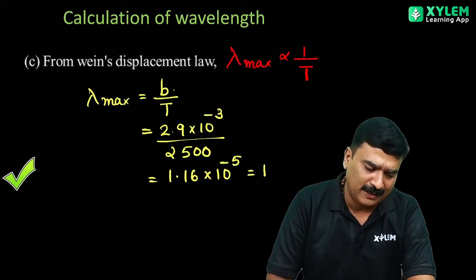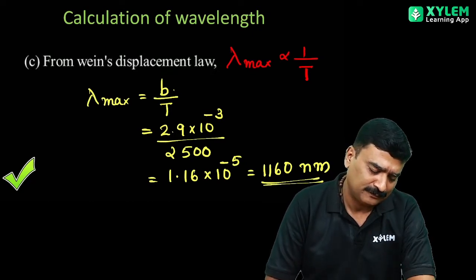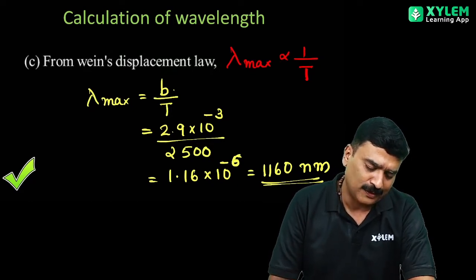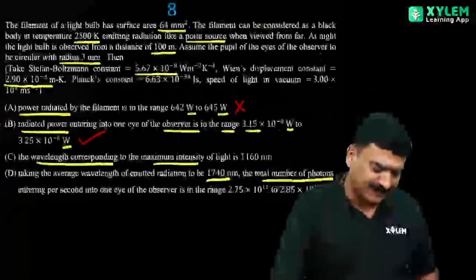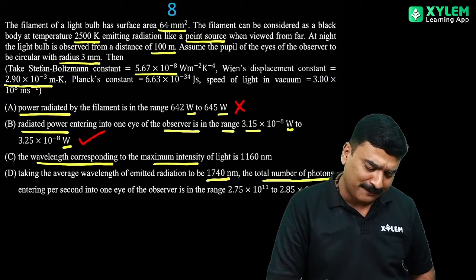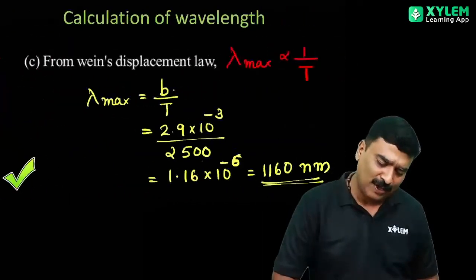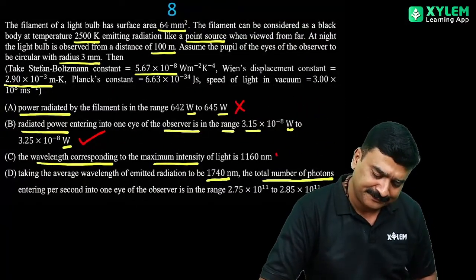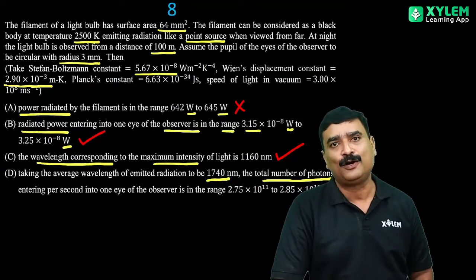The answer is 1.16 × 10^-6 meters, equal to 1160 nanometers. We can check - the wavelength corresponding to maximum intensity of light is 1160 nanometers. It is correct, so option C is correct.